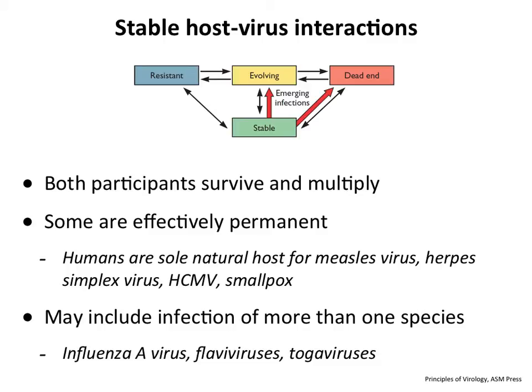In a stable host-virus relationship, the host and virus for the most part both survive. Some hosts may die but the population lives on and both multiply. Some of these are permanent — measles virus has been around for thousands of years, herpes possibly from the dinosaurs, cytomegalovirus, smallpox. There's a continuous cycle of infection and transmission with mortality, but not 100%, so the host survives. Sometimes a stable relationship includes more than one species, like influenza between humans, swine, and birds.